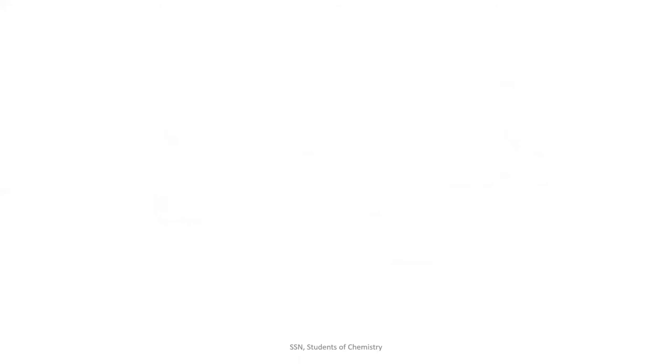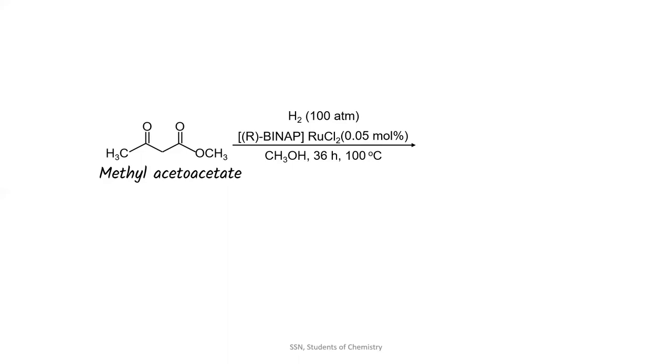In the original report by Noyori's group, they have reduced methyl acetoacetate by passing hydrogen gas at 100 atmospheric pressure, adding 0.05 mole percentage of R-BINAP ruthenium chloride complex by using methanol as their solvent and heating the mixture at 100 degrees Celsius for 36 hours.